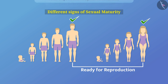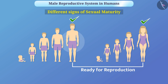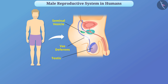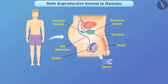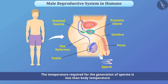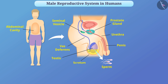Let us now understand the male reproductive system in humans. The male reproductive system consists of a pair of testes, the seminal vesicle, the vas deferens, the prostate gland, the urethra, and the penis. Each testis produces male germ cells called sperm. Since the temperature required for the generation of sperm is less than body temperature, the testes are located outside the abdominal cavity in the scrotum.